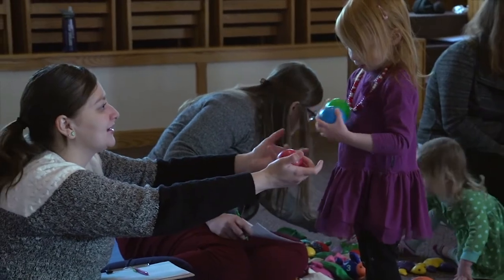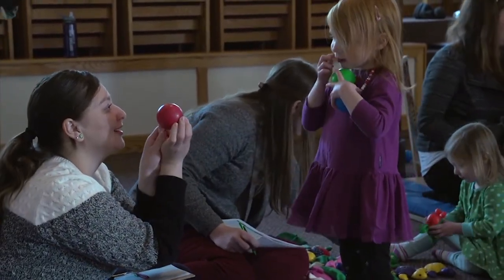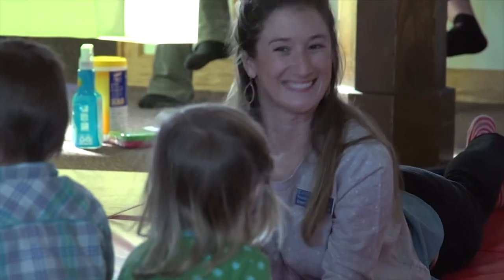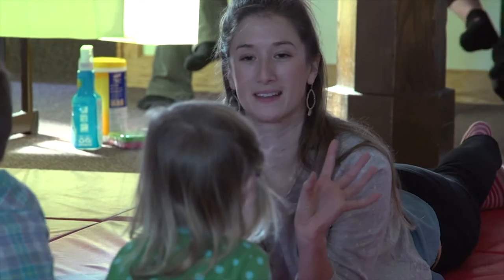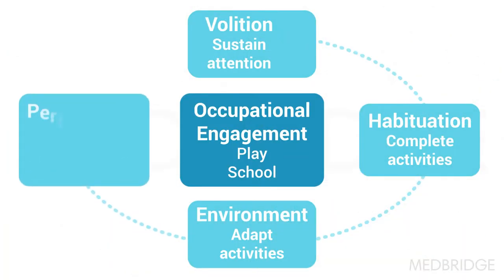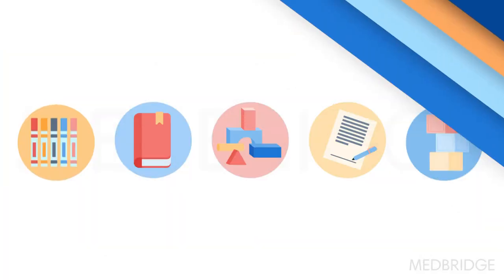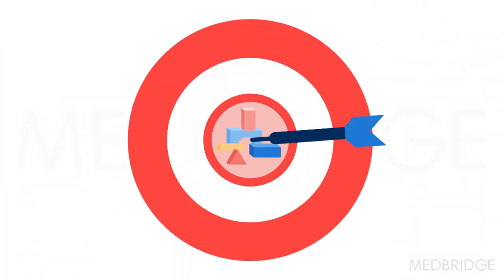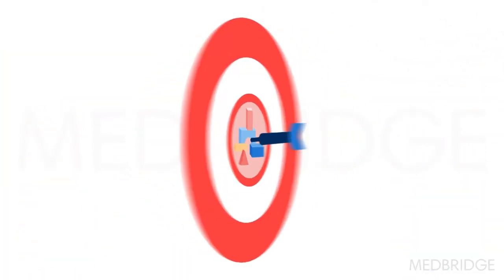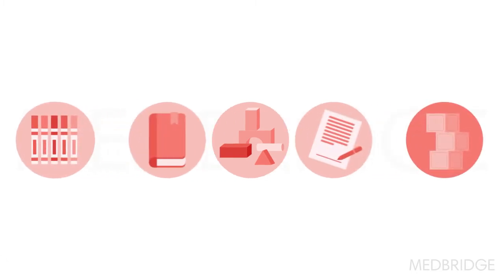This course will examine how strength-based approaches lead to increased self-efficacy and self-determination, which enhances continued occupational performance. The model of human occupation provides a framework to understand the strengths of children, their families, and the environment, which serves as a foundation to develop strength-based intervention plans.